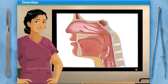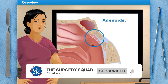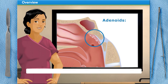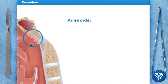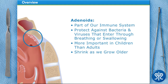Our adenoids are located at the back of the throat, just below where the nose connects, also known as the pharyngeal tonsil. They are part of our immune system because they protect us from the bacteria or viruses that might enter the body when we breathe or swallow. They are more important for children than adults, and they shrink as we get older.